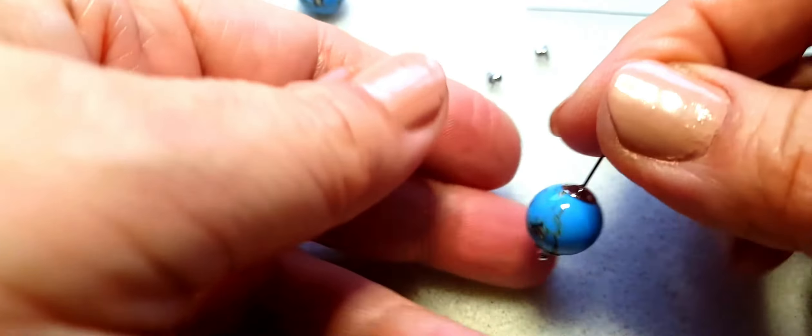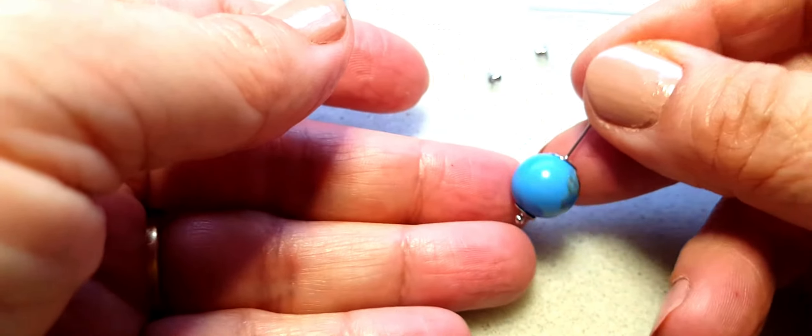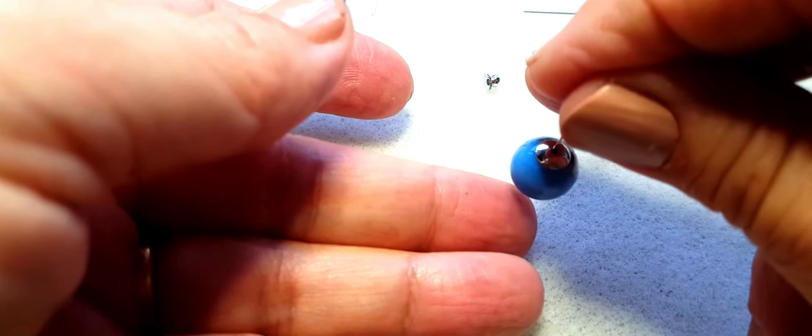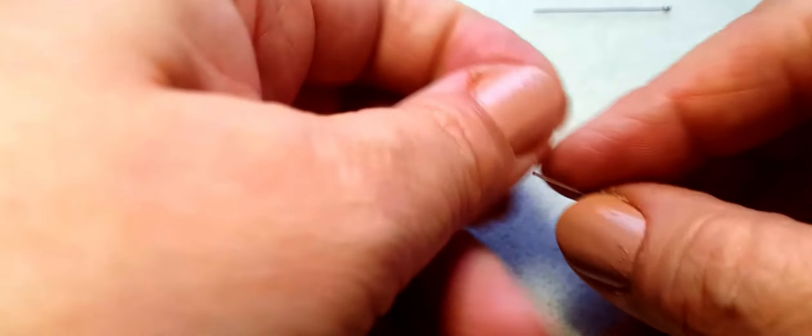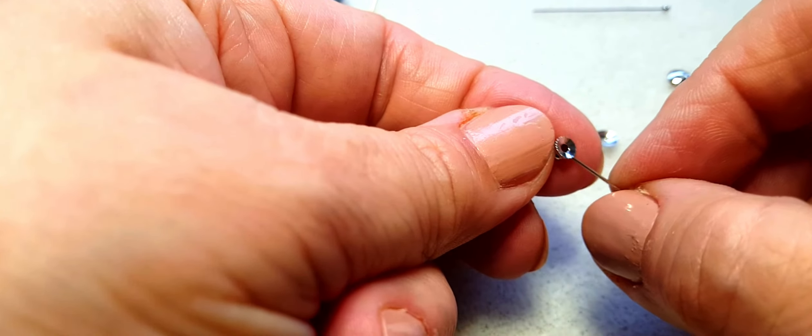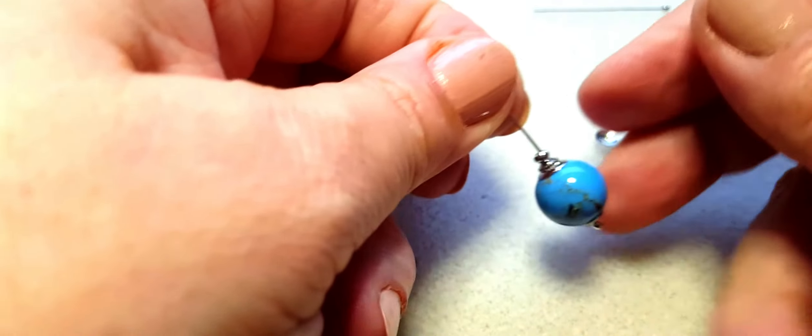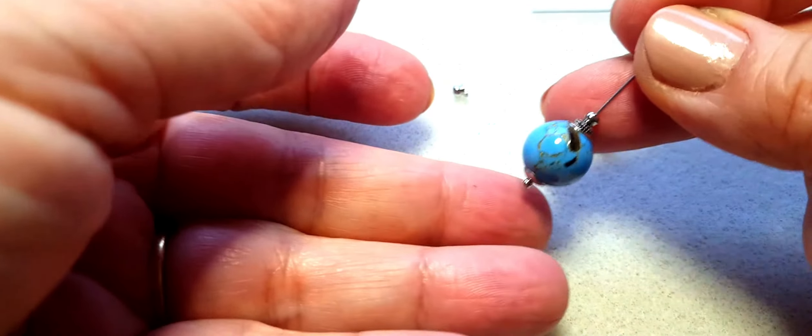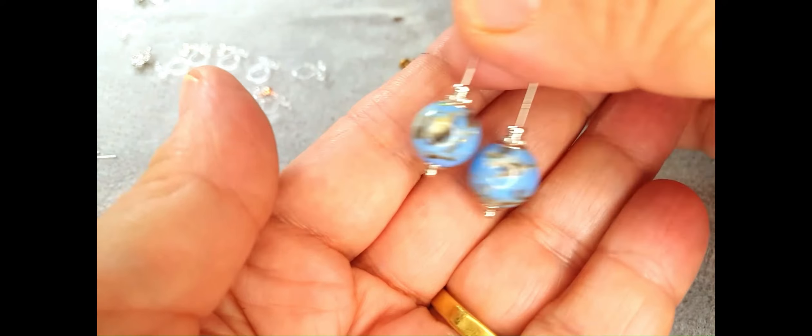We put a smaller bead cup on the bottom of the bead and on top a slightly bigger cup, and it gives us a complete look. But to make it look more interesting, I will add another bead cup. Here we are.